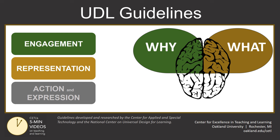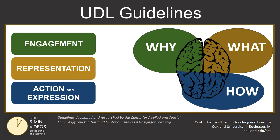And providing multiple means of action and expression activates the how networks in our heads — the strategic networks that allow us to take information we've learned and transform it into something meaningful and new. Encouraging and enabling your students to demonstrate their learning in lots of different but appropriate ways can help them to develop more robust strategic mental networks.